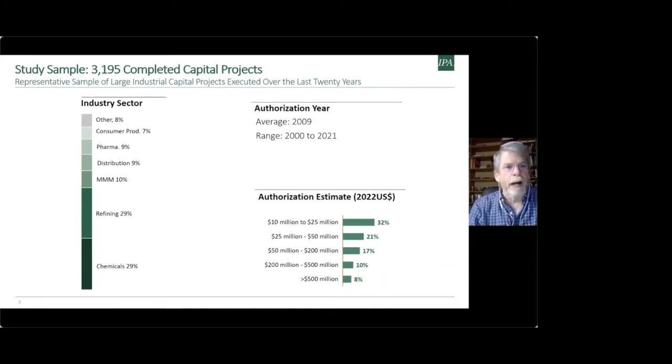And on the left, you can see that the projects come from a wide range of industry sectors, but all heavy industrial type of capital projects. Chemicals industry and refining, they make up almost 60% of the sample. That's the bulk of our data sources. But we also have projects for mining minerals and metals, distribution, which is primarily pipeline, pharma, which is the manufacturing of pharmaceuticals or laboratories, and then consumer products, as well as other kinds of industry sectors. But the message is the data are spanning a long period of time, wide range of project sizes, coming from a wide range of industry sectors, but all heavy industrial capital projects.